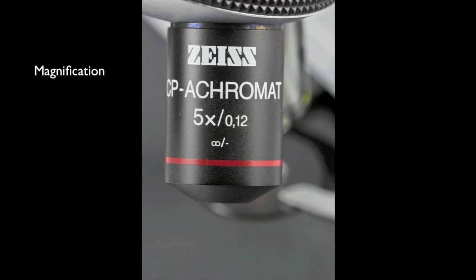Magnification with this lens is 5x, as you can see on the barrel. The ocular lens magnifies the image 10 times for a total magnification of 50x, or 50 times. This means that objects will appear 50 times larger than they actually are.